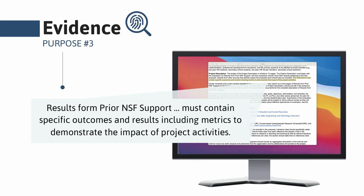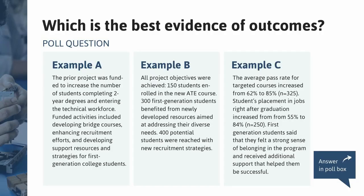Let's look at examples of what evidence statements might look like in a 'Results from Prior Support' section. Here is a set of three example statements. Take your time to read these carefully and then answer the poll to indicate which example would be most compelling to reviewers as evidence of outcomes. The poll should pop up on the right side of your screen — decide which example of evidence you feel is the strongest.